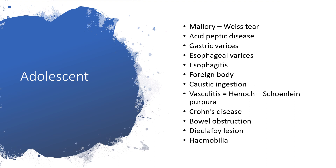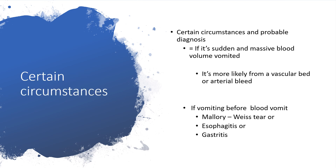So we need to rule out the cause. Certain circumstances will lead to some probable diagnosis. For example, if it is sudden and massive, then we'll be thinking about a vascular problem or arterial bleed. But if the history reveals that the patient was vomiting before hematemesis, then we should be thinking about Mallory-Weiss tear, or esophagitis or gastritis.